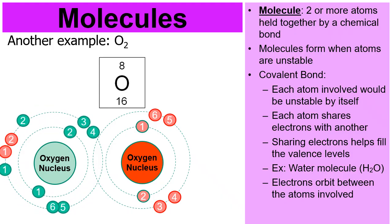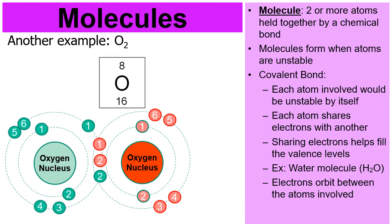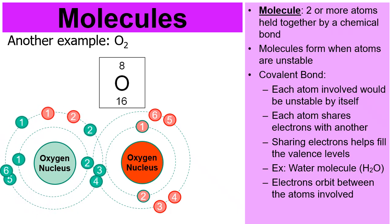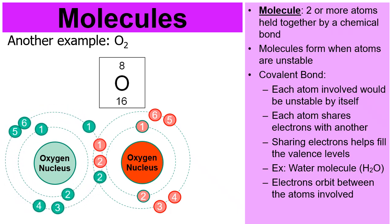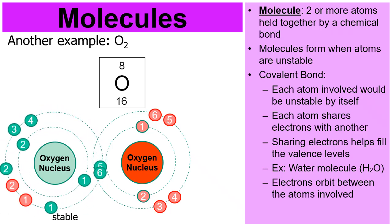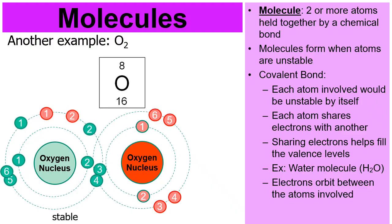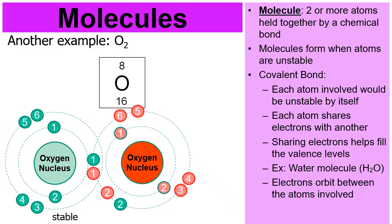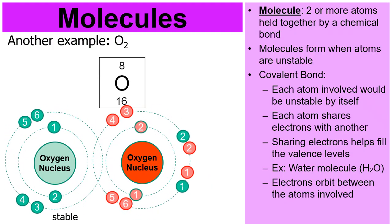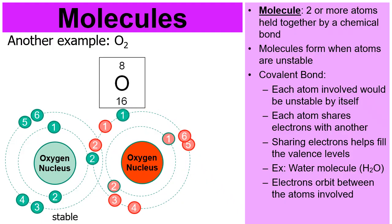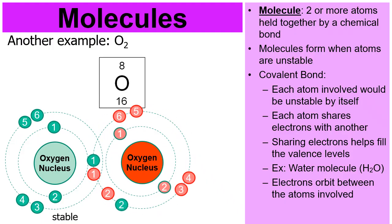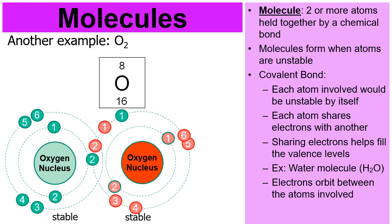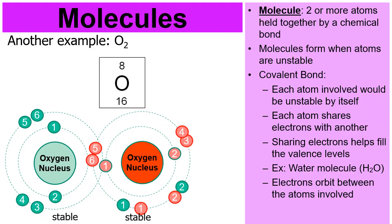The green one has its own electrons plus two that it is borrowing from the red, thus becoming stable. Now, when you look at the red one on the right, it also has six of its own electrons in the second level, but then it's borrowing two from the green to become stable. The electrons go back and forth.